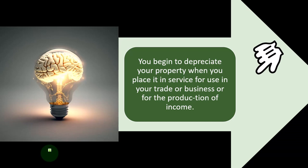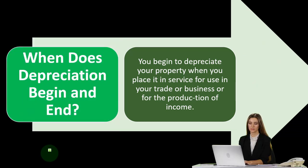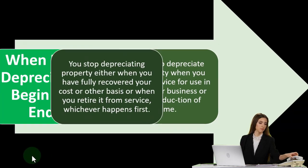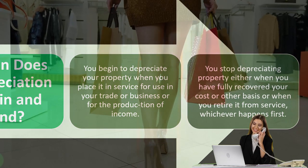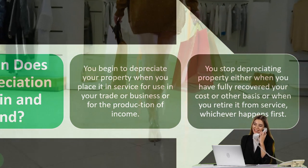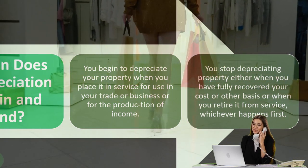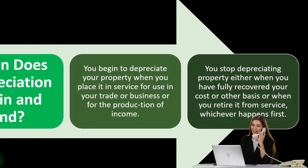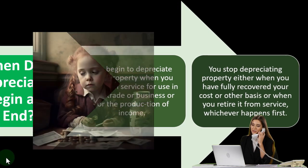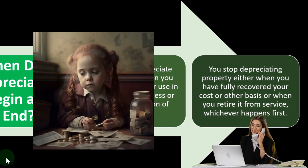You begin to depreciate your property when you place it in service for use in your trade or business or for the production of income. Clearly, we're buying it for ordinary and necessary business purposes — that's why it would be an expense. So when we put it in place for the production of income, revenue generation being our business goal, that is when you're going to put it on the books as a depreciable item.